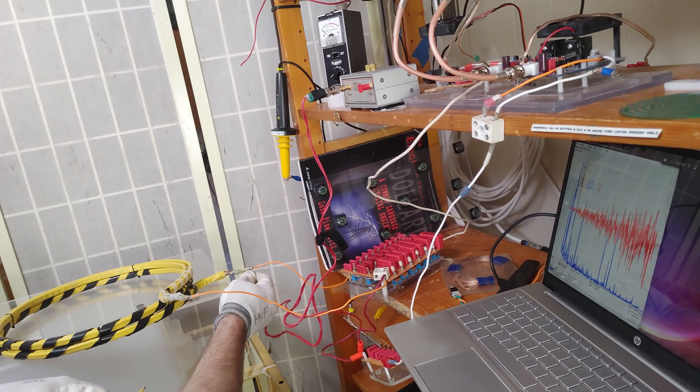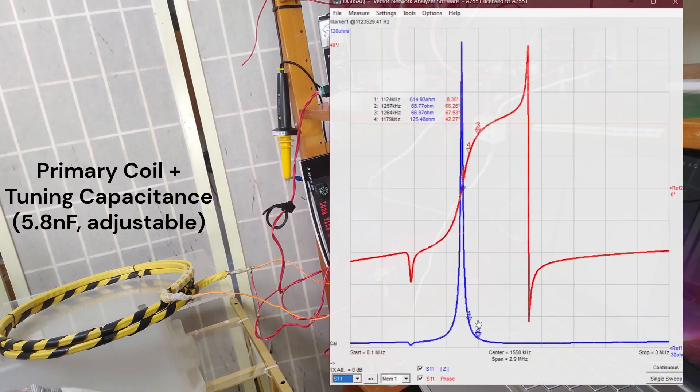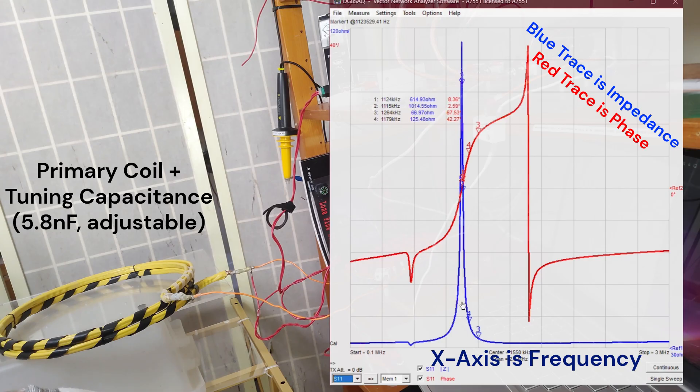The Tesla coil has more than just one resonant frequency. First the VNA has been connected to the primary tank circuit. We have a resonant peak on the primary tank circuit right there at marker two, which is 1111 kilocycles.